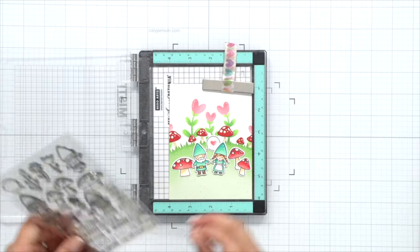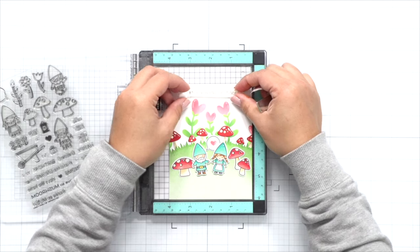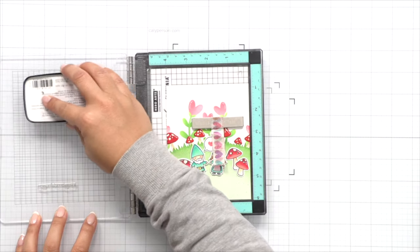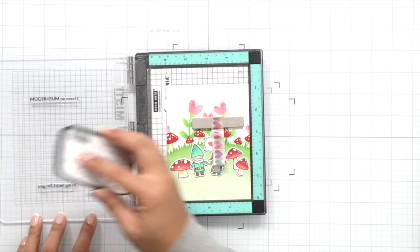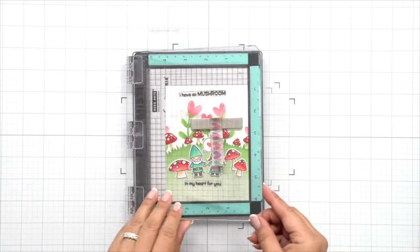To finish my card, I just need to add a sentiment. So I'm using a two-part sentiment here and breaking them up, adding one segment at the top and one segment at the bottom just to make it a little bit more balanced on my card since there's some white space at the top and some green space at the bottom.